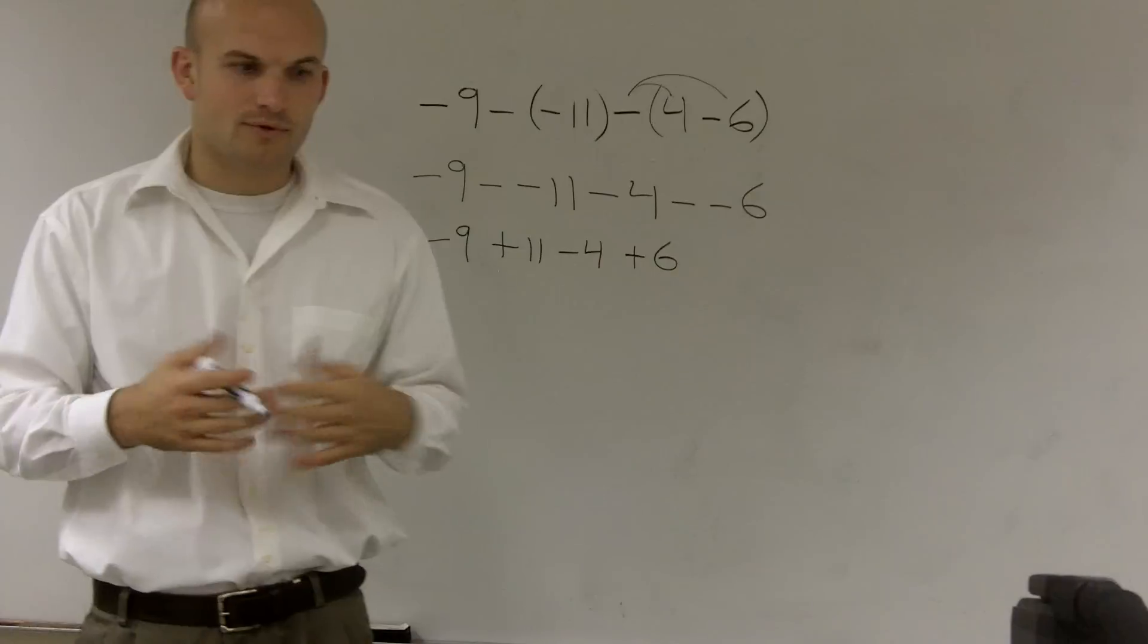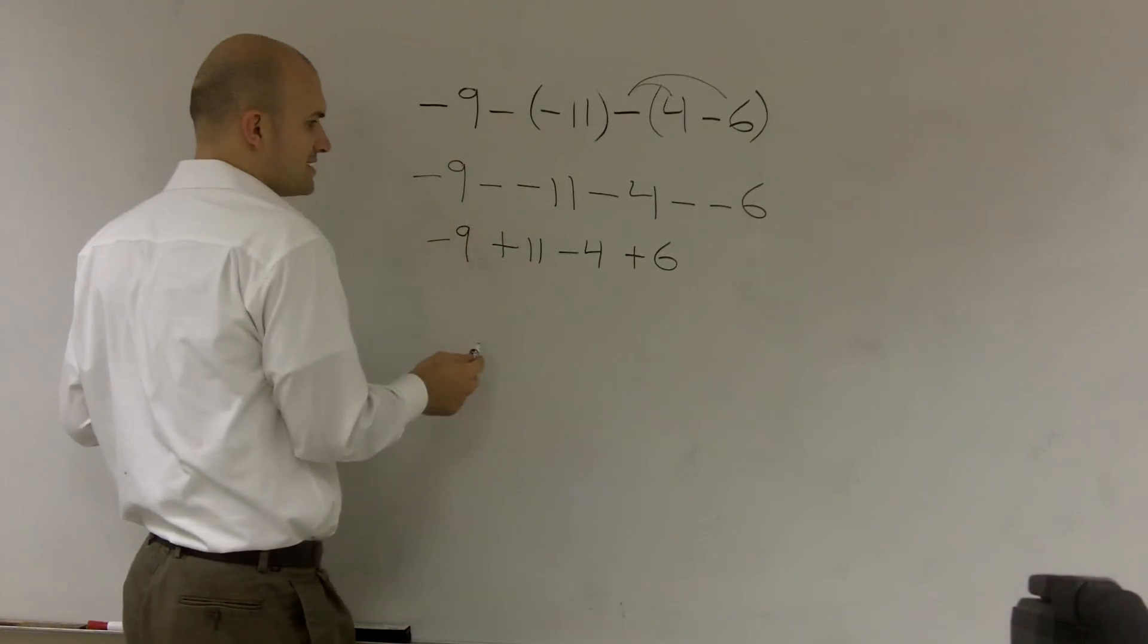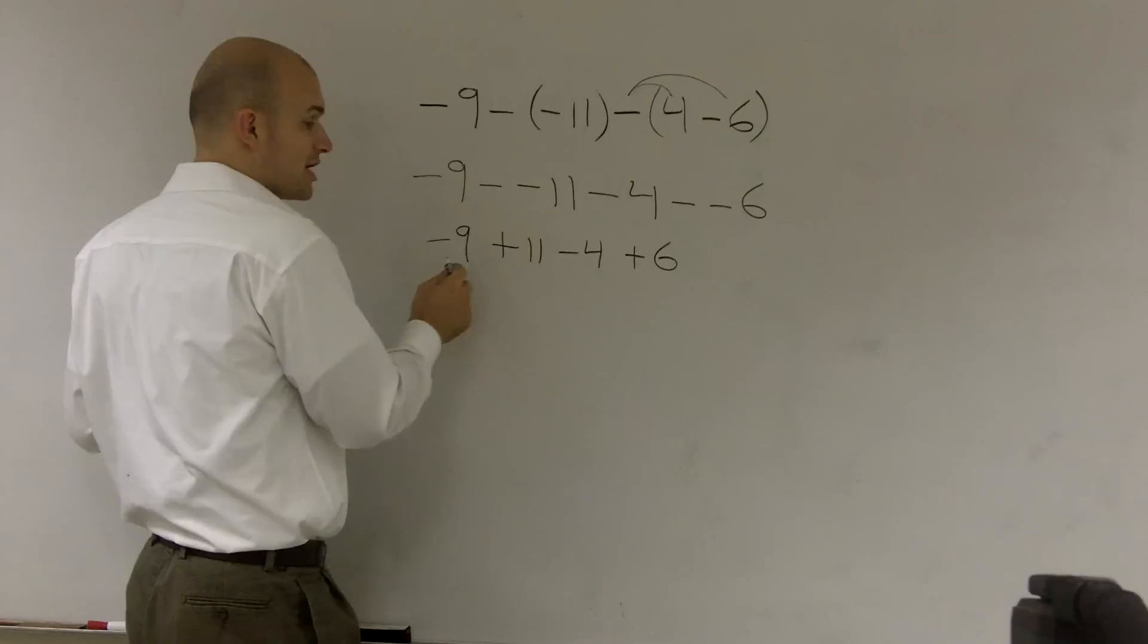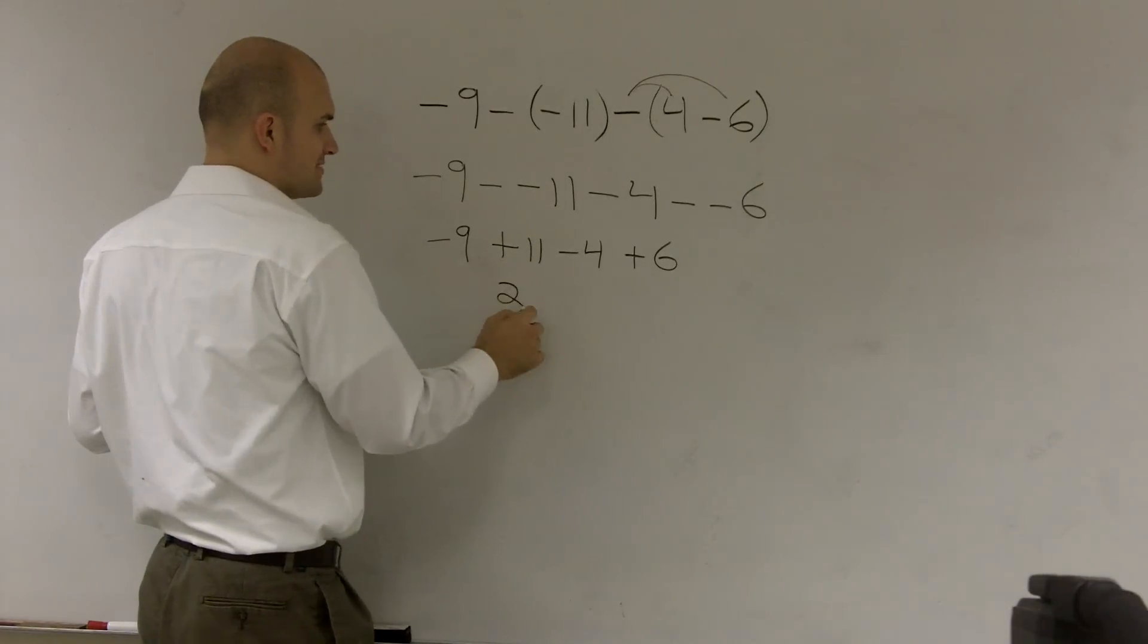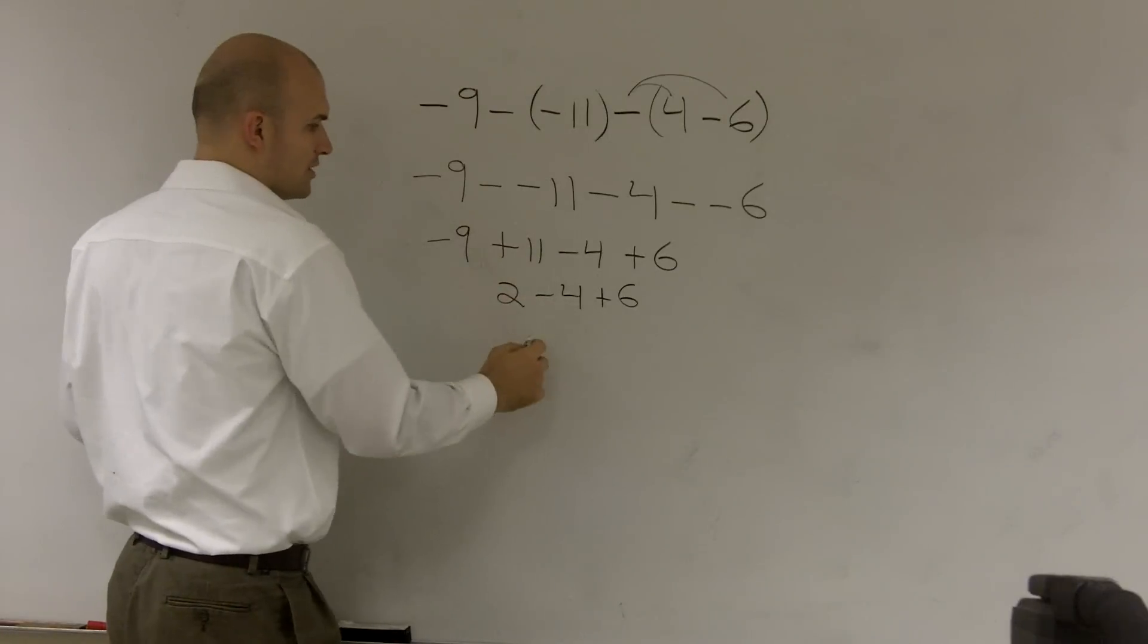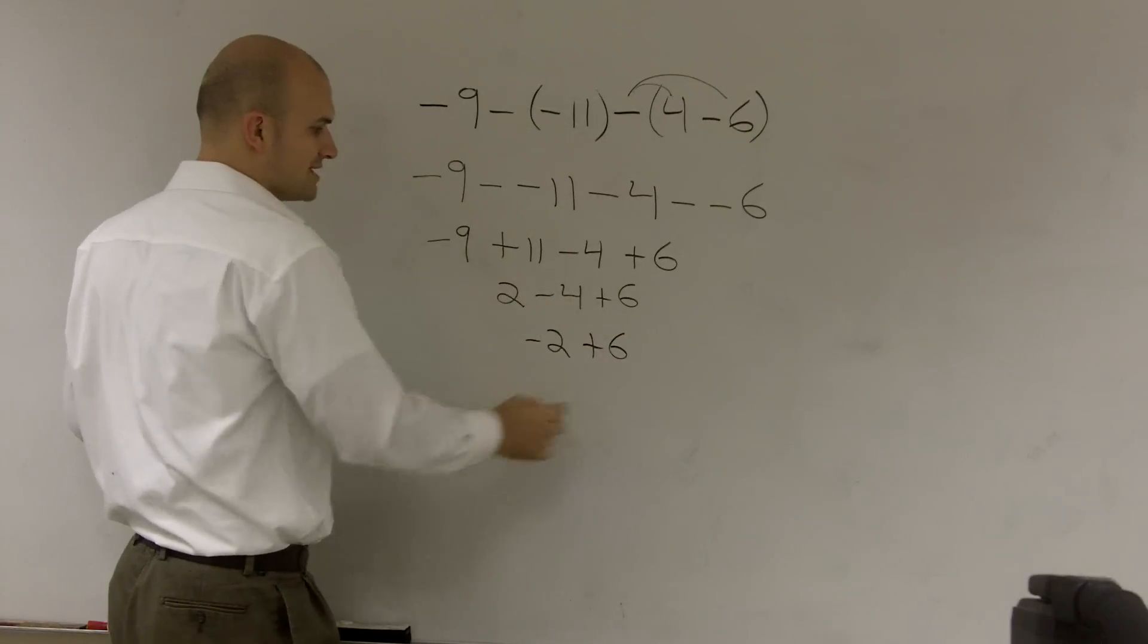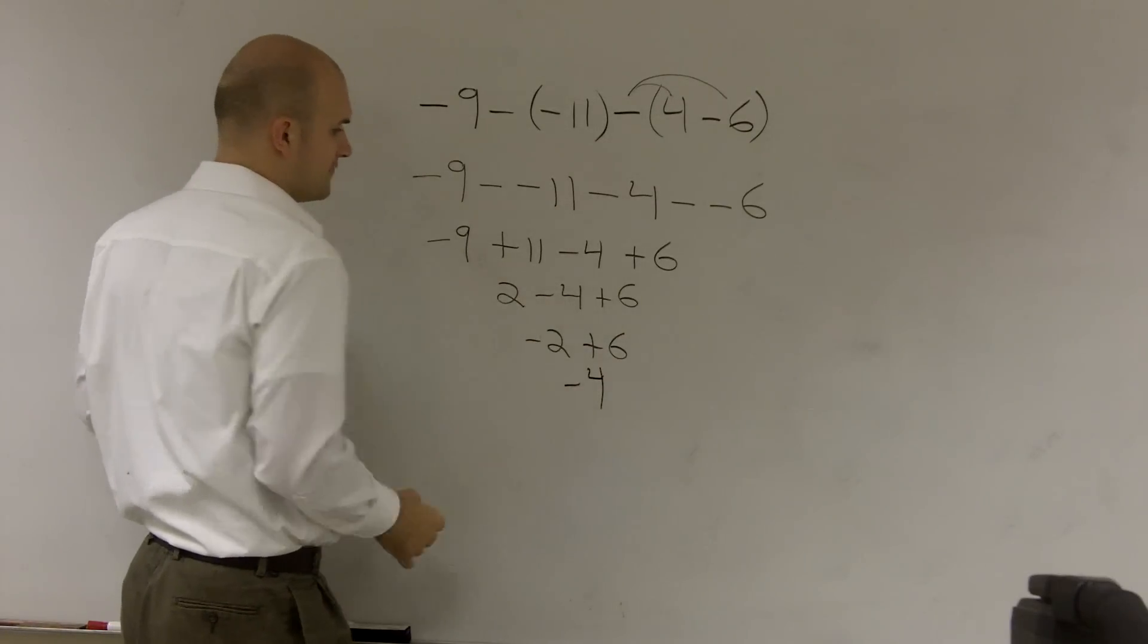Then from here, I'm just going to work from left to right. Negative 9, I'm sorry, plus 11 is positive 2 minus 4 plus 6. 2 minus 4 is negative 2 plus 6. Negative 2 plus 6 is negative 4.